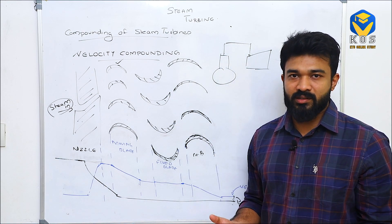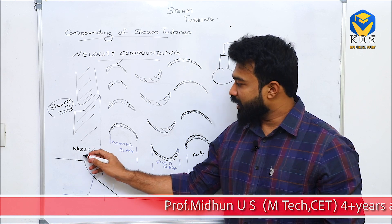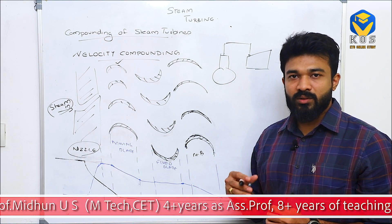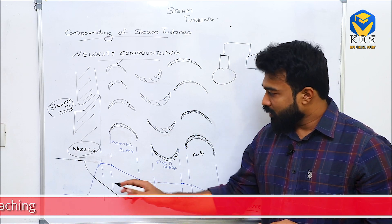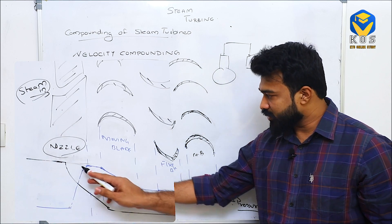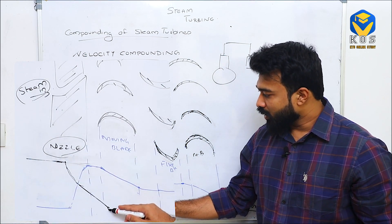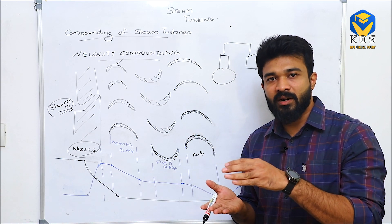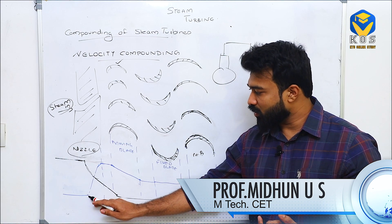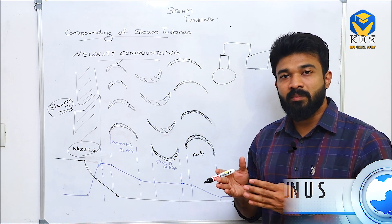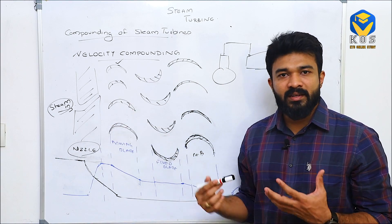This high pressure is not directly useful for us in the turbine. We need to convert this high pressure. We use a nozzle as a device. The nozzle has no moving parts — it uses area variation. The blue line is the velocity and the black line represents pressure. High-pressure steam passes through and moves to a very low pressure, so velocity increases from low to very high. Now we have low-pressure, high-velocity steam at the nozzle outlet.